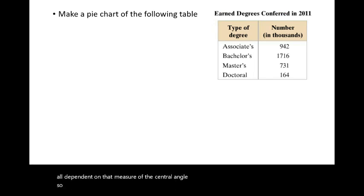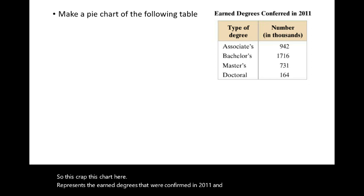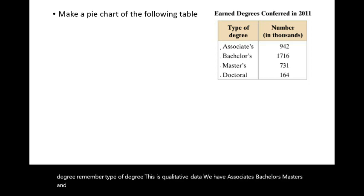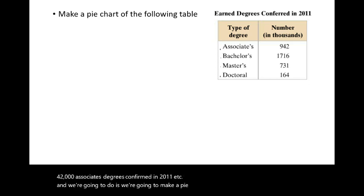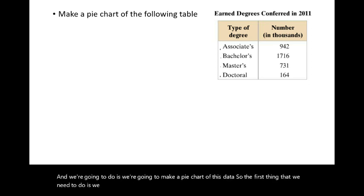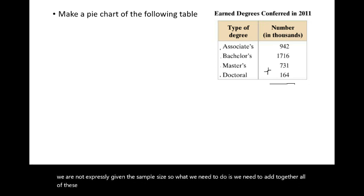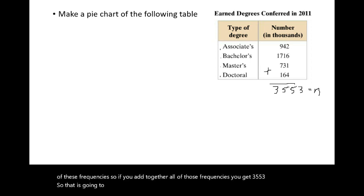This example uses earned degrees conferred in 2011 broken down by type: associates, bachelors, masters, and doctoral. The frequencies in thousands are given. Since the sample size isn't given directly, add all frequencies: 942 + 1,716 + 731 + 164 = 3,553. This total is the denominator for computing relative frequencies.